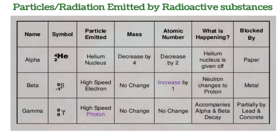Alpha, beta, and gamma particles have their own medical and industrial applications, which will be covered in subsequent videos on radioactivity. Regarding decay equations, a particular radioactive material can undergo emission of two, three, or four alpha particles — either simultaneously or at different times — as well as more than one beta particle and gamma particle at different times, all with the emission of high energy.